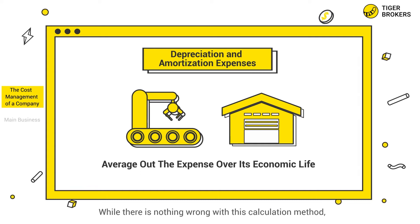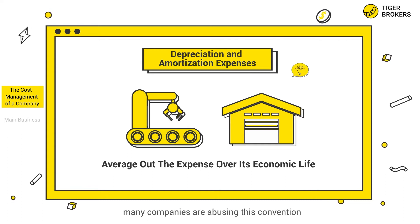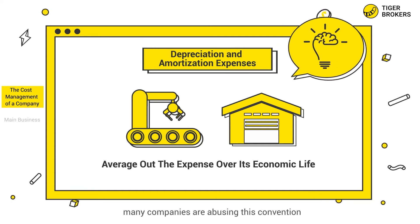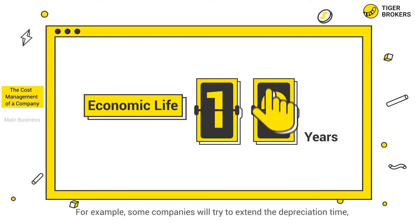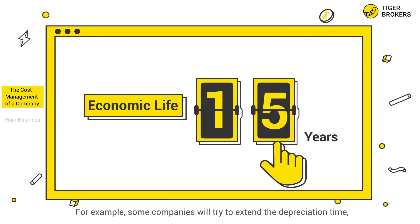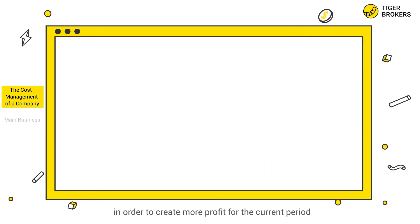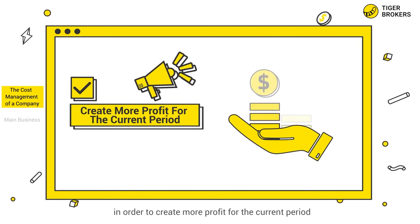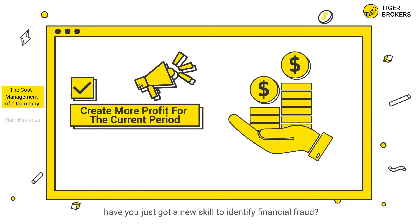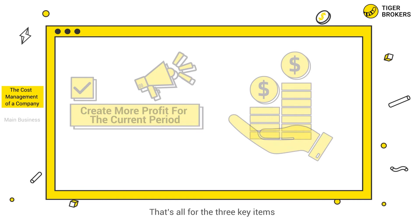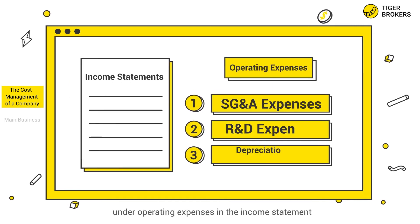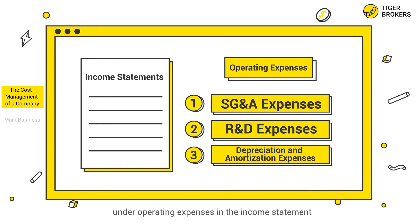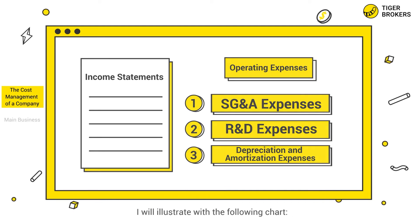While there's nothing wrong with this calculation method, many companies are abusing this convention. For example, some companies will try to extend the depreciation time in order to create more profit for the current period. Through this knowledge, you now have a new skill to identify financial fraud. That's all for the three key items under operating expenses in the income statements, as illustrated in the following chart.